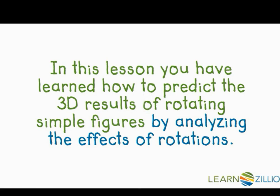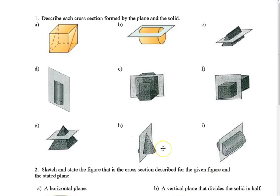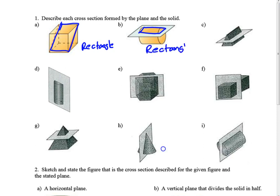Now we're going to do a bunch of examples. Describe each cross section formed by the plane and the solid. Here we have a plane slicing through a rectangular prism — that would form a rectangle. When we slice this cylinder in this direction, we also get another rectangle through that slice.